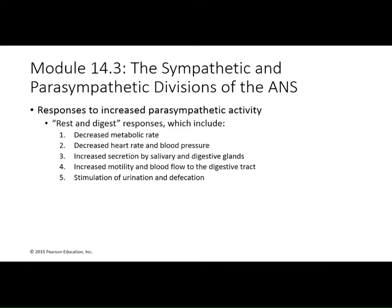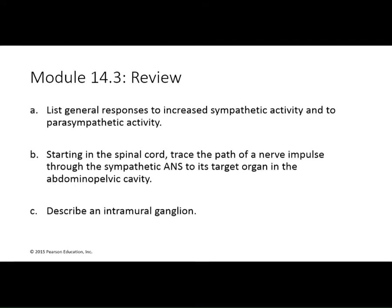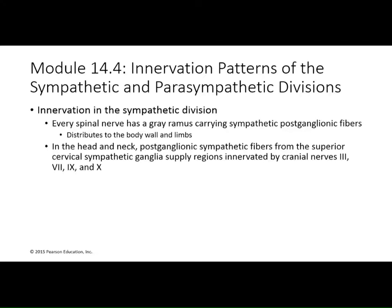The parasympathetic nervous system — the rest-and-digest system — produces decreased metabolic rate, decreased blood pressure and heart rate, increased salivary and digestive secretions, increased motility of food and blood flow through the digestive tract, and stimulation of the urinary and digestive system for defecation. Now let's look at the innervation within the sympathetic nervous system. A ramus is a branch, and every spinal nerve has a gray ramus carrying sympathetic post-ganglionic fibers going to the body wall and limbs.